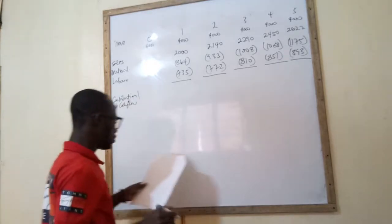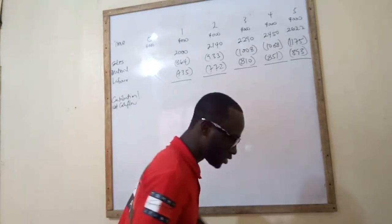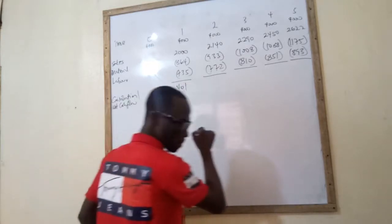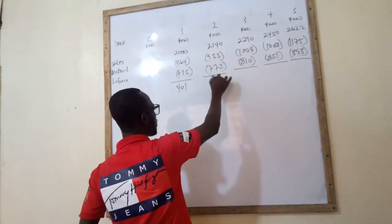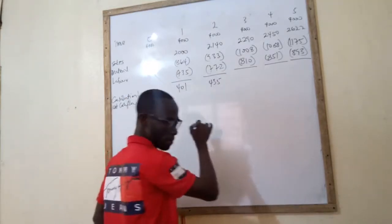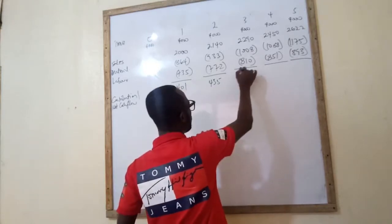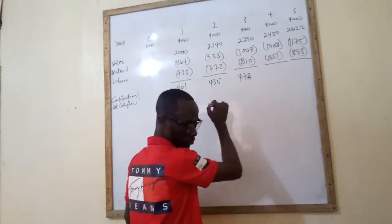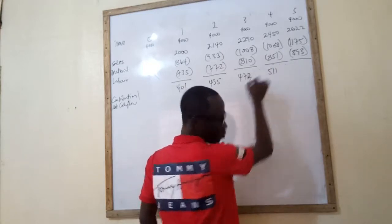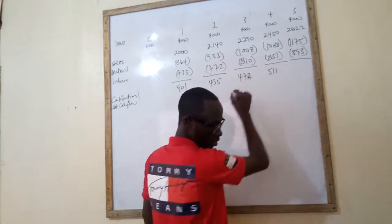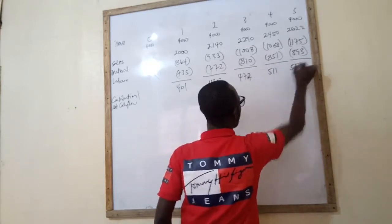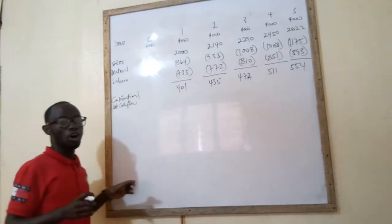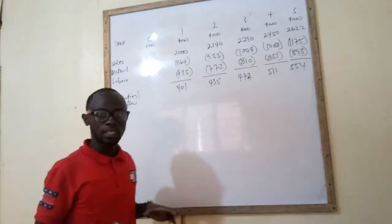When we add together, the contribution or net cash flows figures are: year one 401, year two 435, year three 472, year four 511, and year five 554.